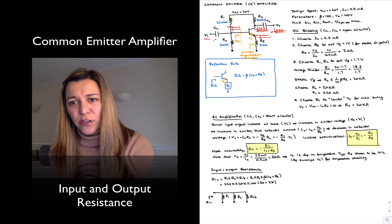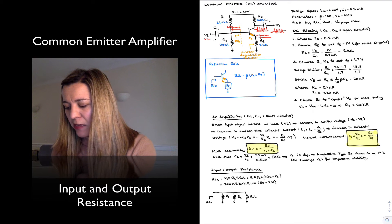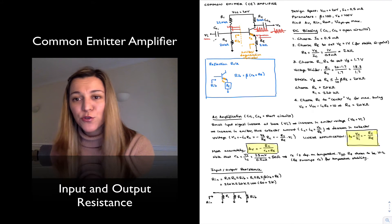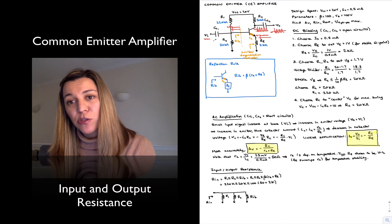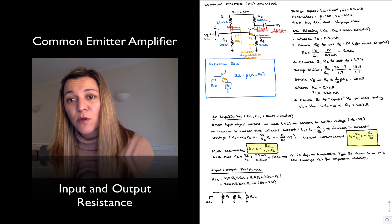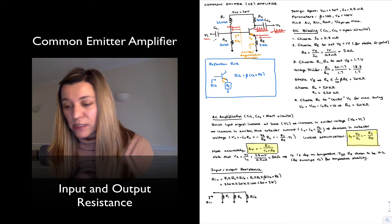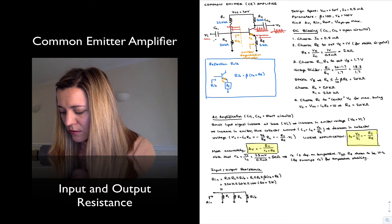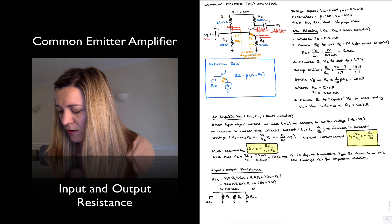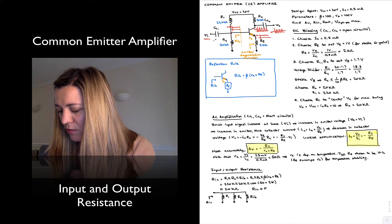So we can see we have 220k in parallel with 20k in parallel with something in the order of 200k. The parallel combination of the three is going to be approximately equal to R2, since R2 is much smaller than the other two resistances, and so we can approximate this as 20 kilohms, or we can say Rin is approximately equal to R2.